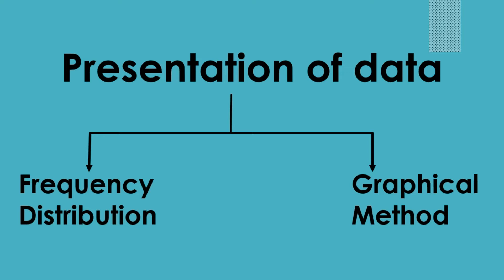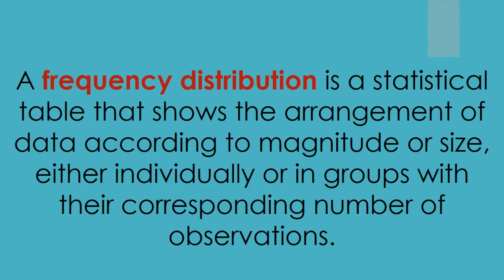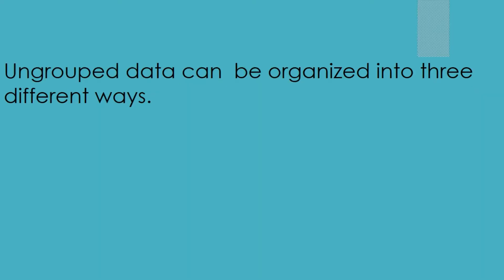A frequency distribution is a table that shows the arrangement of data according to magnitude or size, either individually or in groups, with their corresponding number of observations. Ungrouped data can be organized into three different ways.